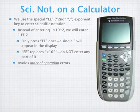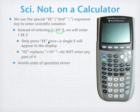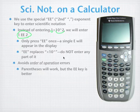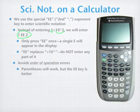Using EE helps us avoid order-of-operation errors. If your calculator sees 1 times 10 power 2, it treats the 1 as one number and the 10 to the power 2 as a second number. We want this to be all one number. Entering 1E2 tells your calculator it's all one number. You could use parentheses around the expression, but the EE key is better, quicker, and more efficient.